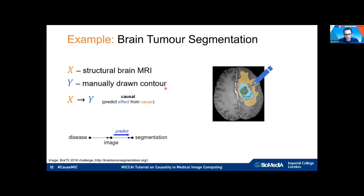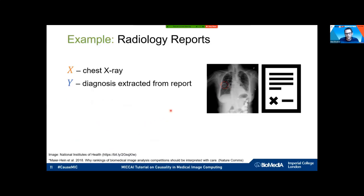There's still an underlying disease — in the glioblastoma case from the BraTS challenge — that causes how the image looks, but the segmentation annotation is an effect of the image because someone drew that contour. We are basically trying to replicate the manual annotation process. That's why we consider this a causal relationship.